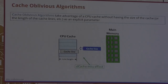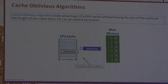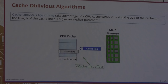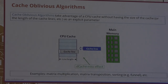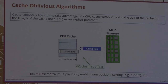Cache-oblivious algorithms benefit from how you traverse data structures and how they are laid out in main memory to be more CPU-cache friendly. A cache miss causes something to be retrieved from main memory into the CPU cache line. Examples include matrix multiplication, matrix transposition, and funnel sorting. These algorithms perform well independently of the CPU cache line size — you are agnostic to cache line size, but due to your traversal and access patterns, you are very CPU-cache friendly.